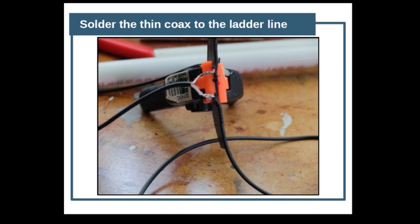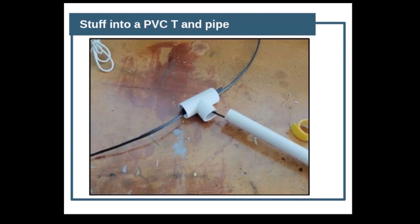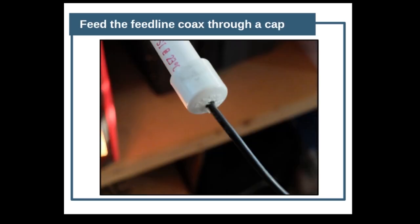We're going to solder the thin coax to the ladder line. We're going to do this on both sides - we're going to mirror them - and then stuff that into a PVC T and run the feed line down a PVC pipe. After we do that, we're going to run the feed line through a cap. You can see here, this is my RG-58 going through one of the PVC caps and it feeds up through the handle. At first you're going to feed it all the way up so it'll be easier to solder, then pull the coax down to make it all nice and neat.